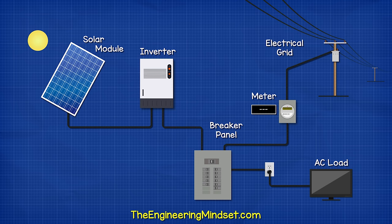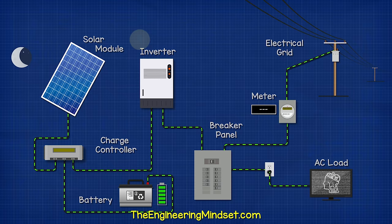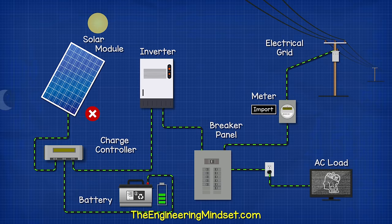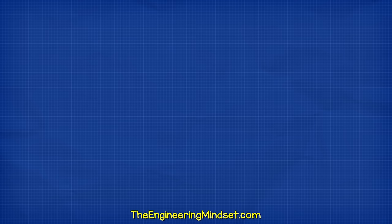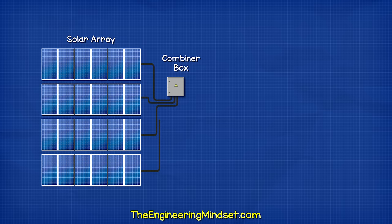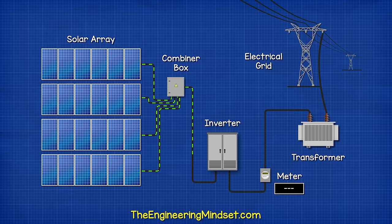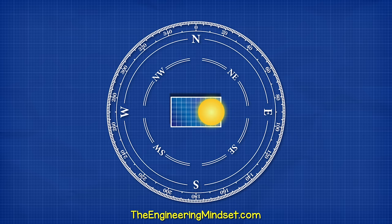More advanced systems will use a battery bank which requires a charge controller. The solar modules will charge the batteries and power the appliances, but when the batteries are full, the excess power is sold back to the grid. At night time, the batteries power the home until they are empty. At this point, electricity needs to be purchased from the grid. In the event of a power cut, the batteries will power the home until they are empty, and then in the daytime they will recharge. Solar farms will have multiple rows of solar panels generating much higher voltages. These will then combine and connect into a large inverter and then feed into a transformer substation. Here, the voltage is increased and it is then exported to the grid.